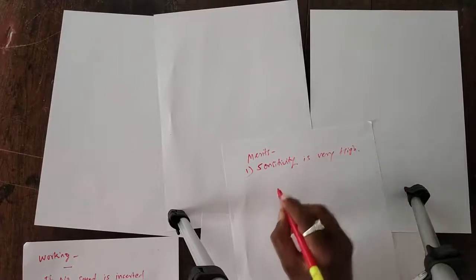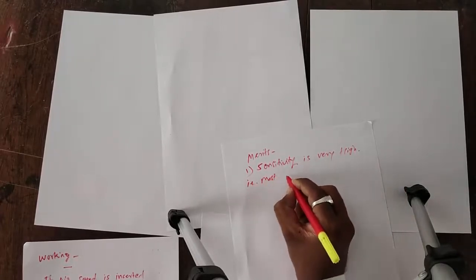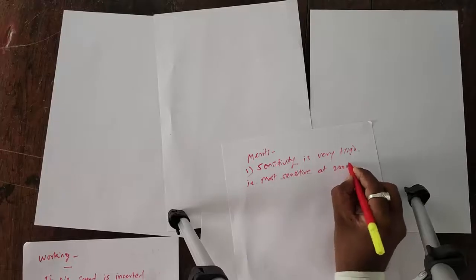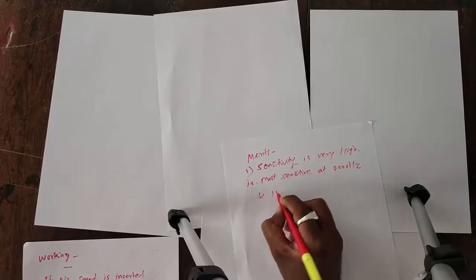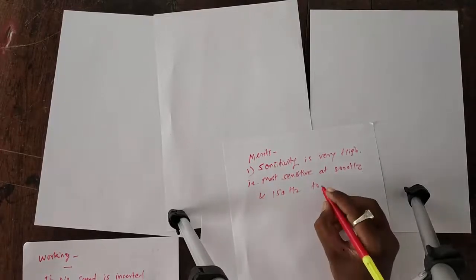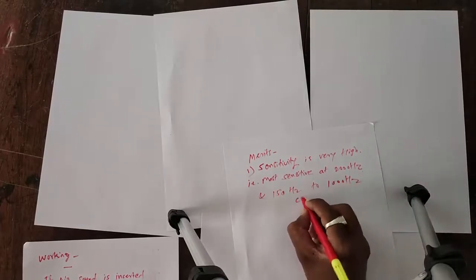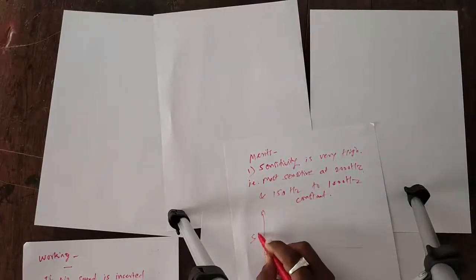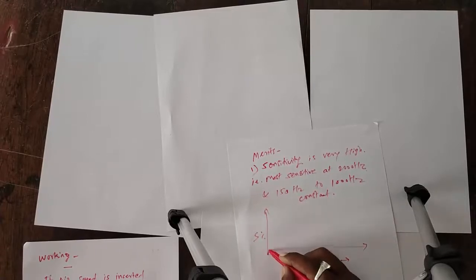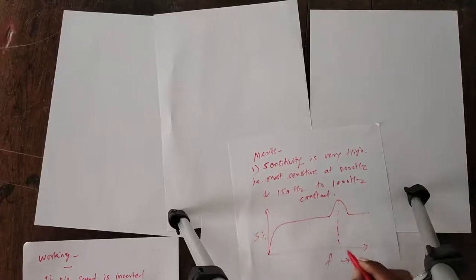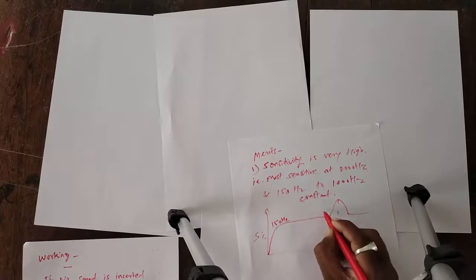And second, from 150 Hz frequency to 1000 Hz frequency, the sensitivity is constant. In this graph, the sensitivity on y-axis and the frequency on x-axis. First, the intensity of the sound increases up to 150 Hz. Above 150 Hz, it is constant up to 1000 Hz, and it gets most sensitive at 2000 Hz, maximum peak.